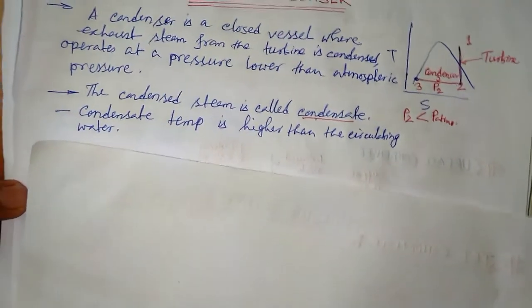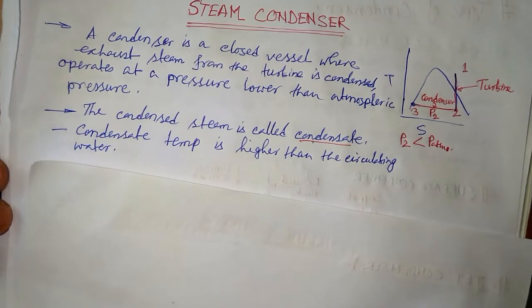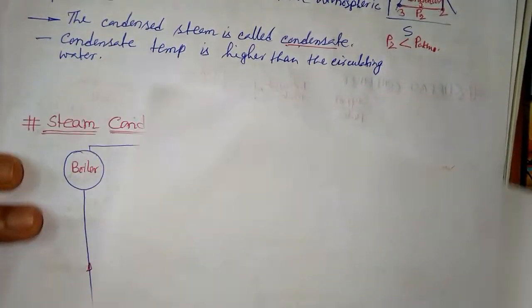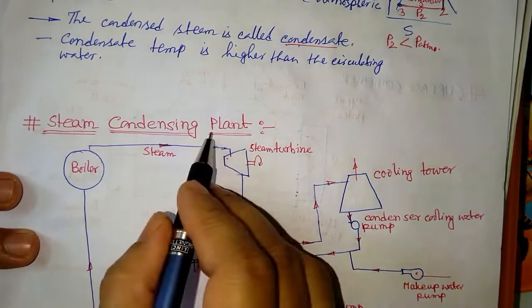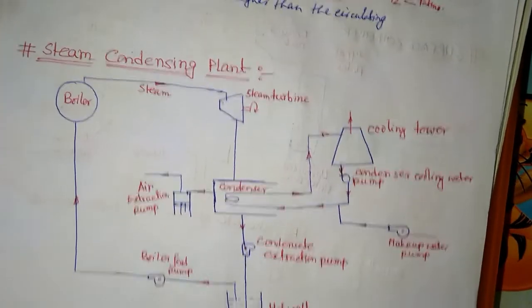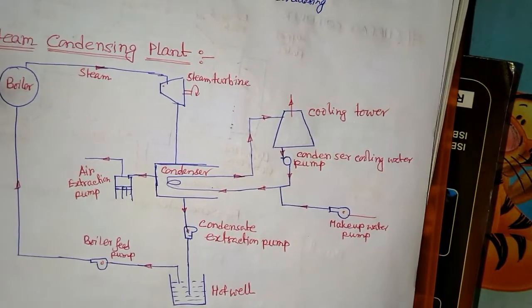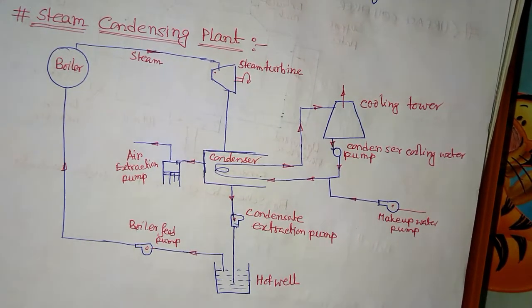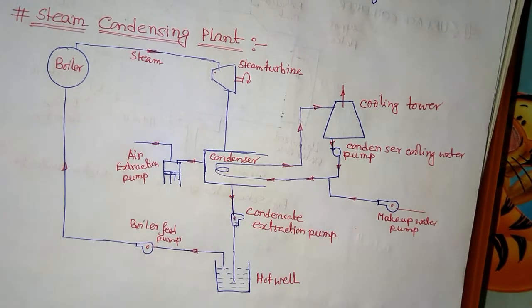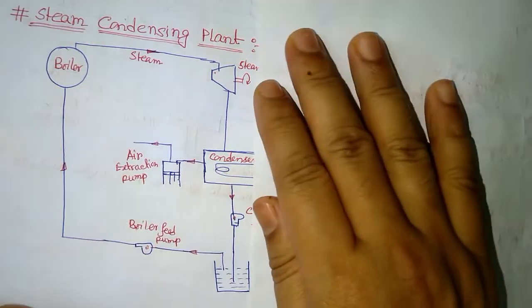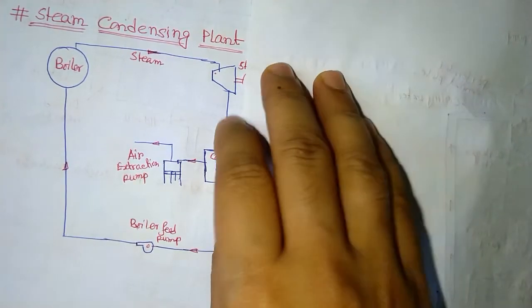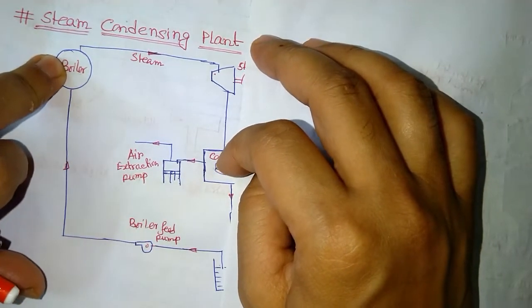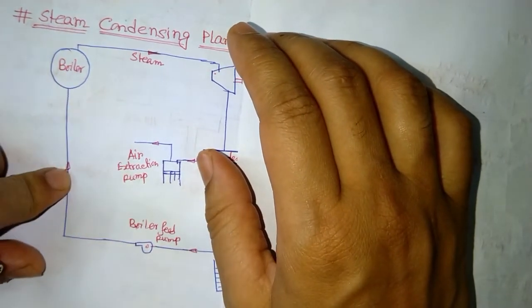Now let's see the steam condensing plant — the components required inside or around the condenser to produce condensed liquid. If you look at the condensing plant, you can identify the main steam power plant components: turbine, condenser, pump, and boiler. Our main interest here is on the condenser.